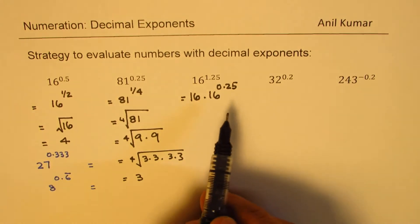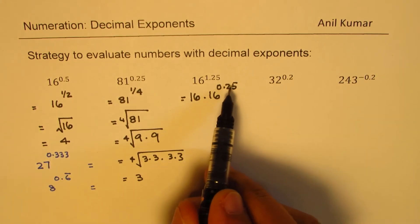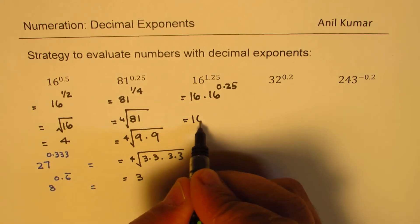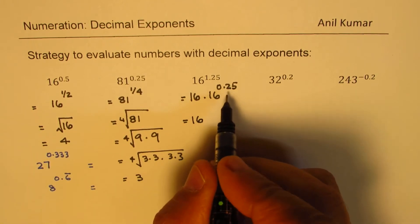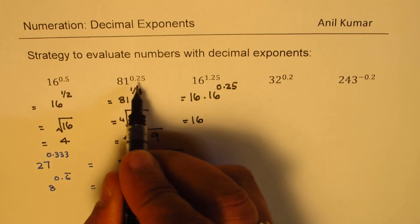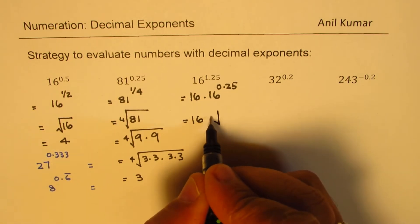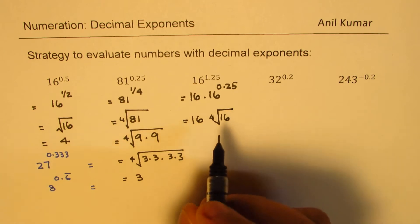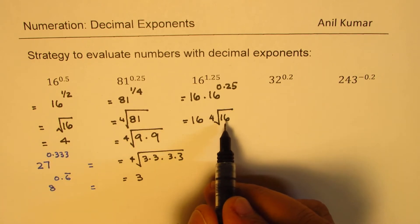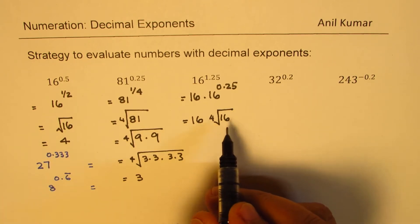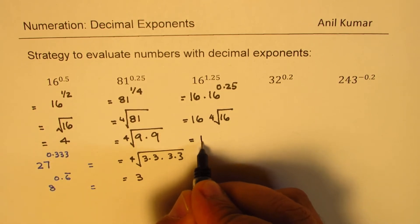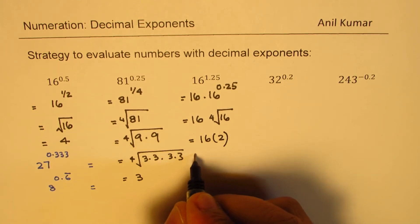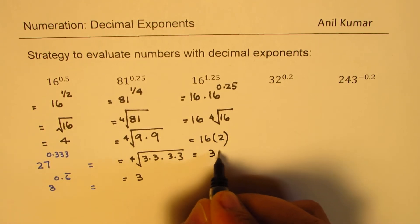0.25 is a quarter, so we have 16 whole and the fourth root of 16. The square root of 16 is 4, and the fourth root is 2. So we write this as 16 times 2, which equals 32.